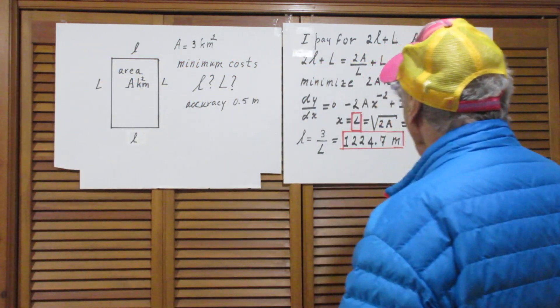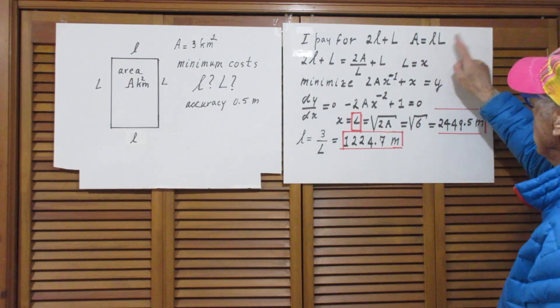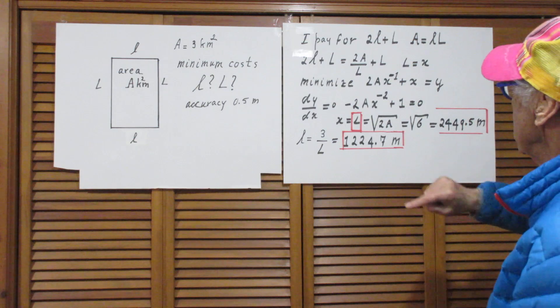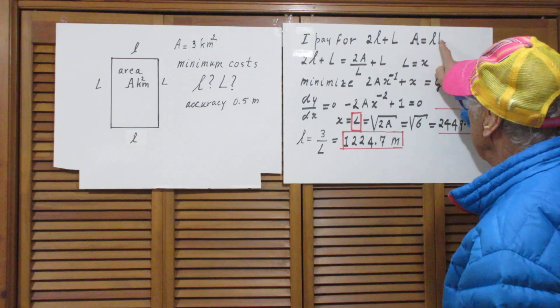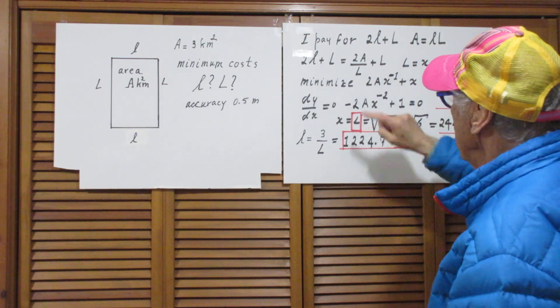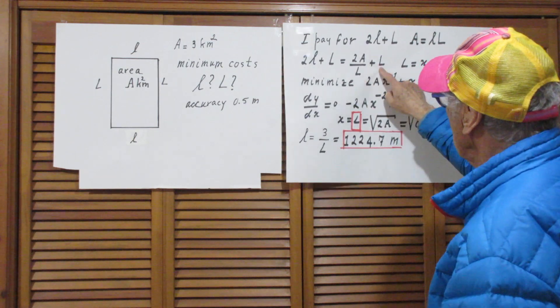Small l times capital L is A, so I replace little l by A divided by L. And so we get that I pay for 2A divided by capital L plus L, and I have to minimize that function.